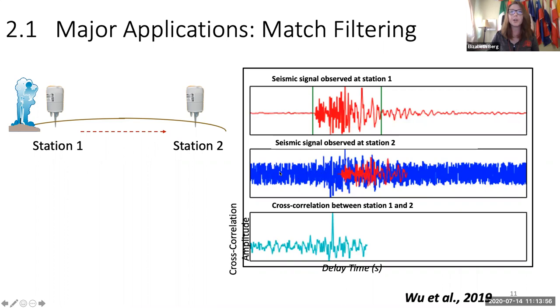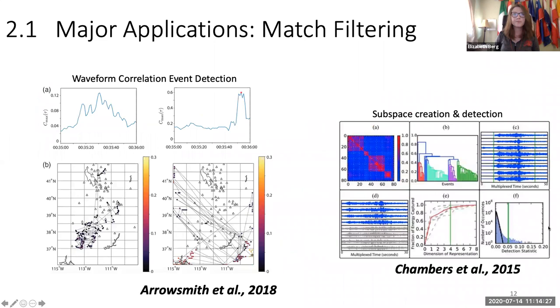A quick overview of match filtering. We can do cross correlation, which is basically a moving sliding dot product. This is a really nice representation provided by Shimei Wu, in reference to her recent work on Yellowstone and steamboat geysers. We can see the delay time and the cross correlation amplitude. When this waveform can be detected within this noisy signal, then we get a spike, which many of you are familiar with based off of your responses.